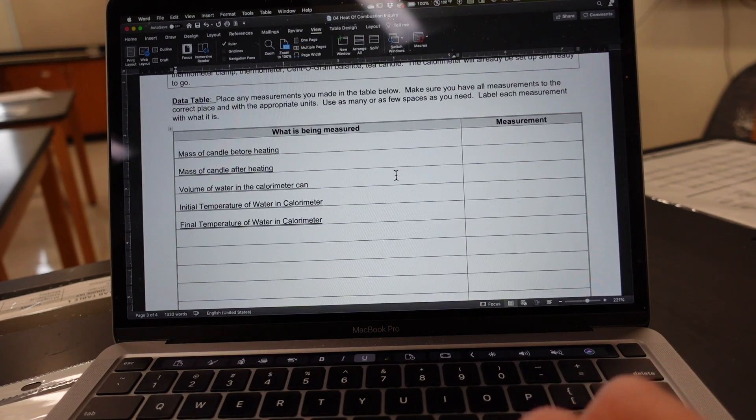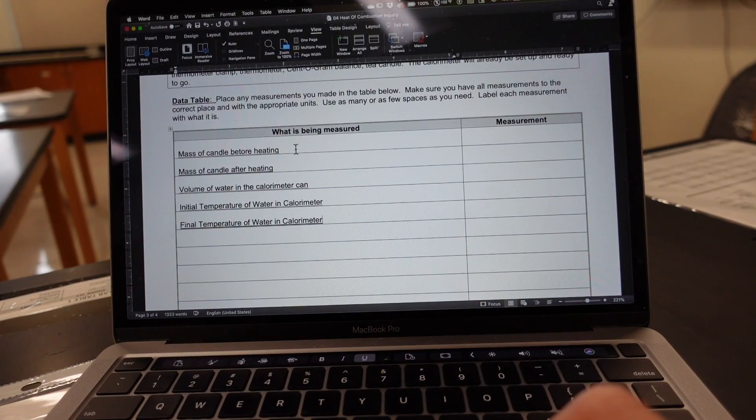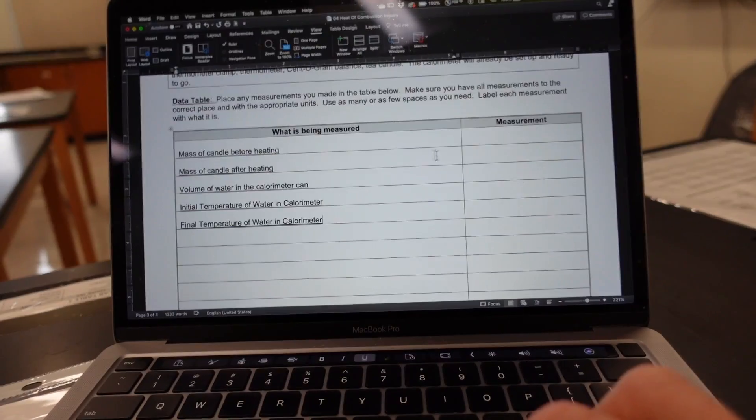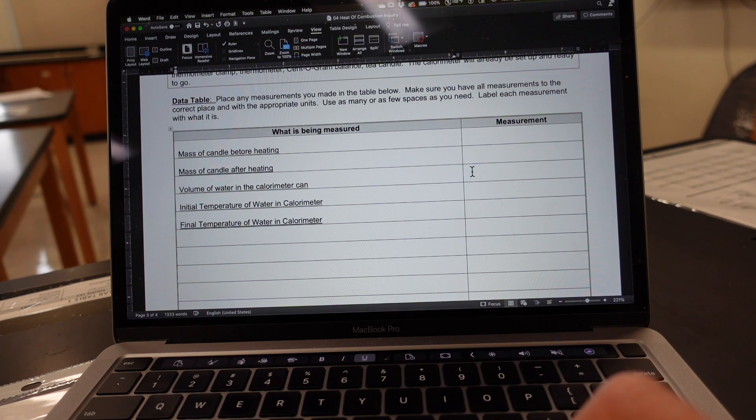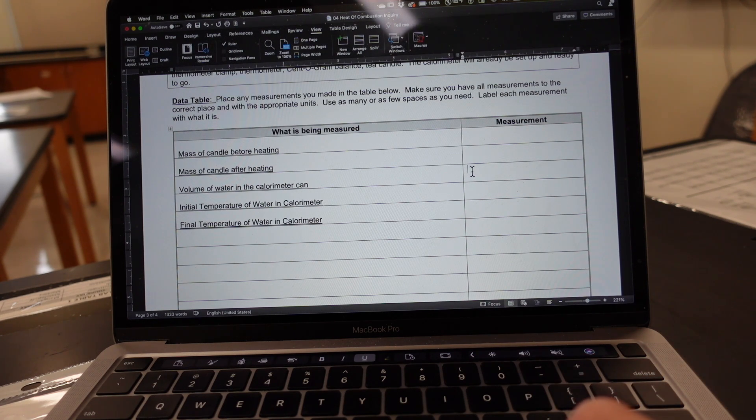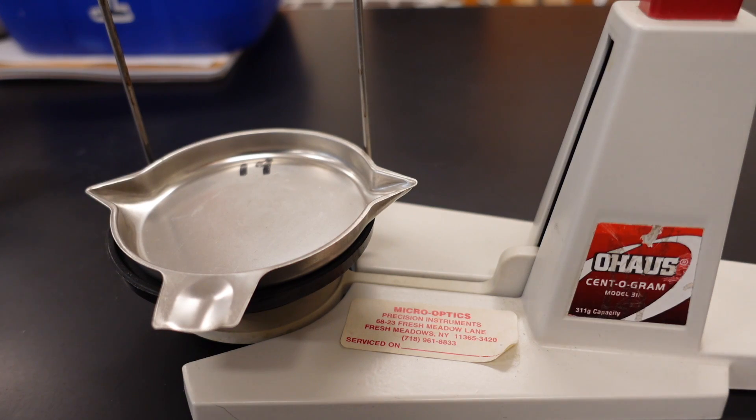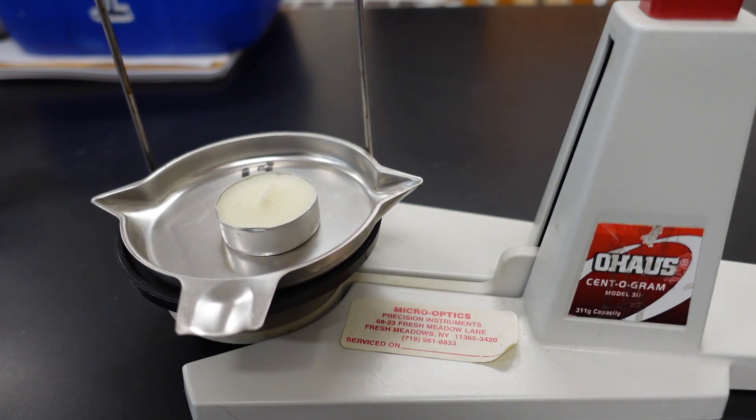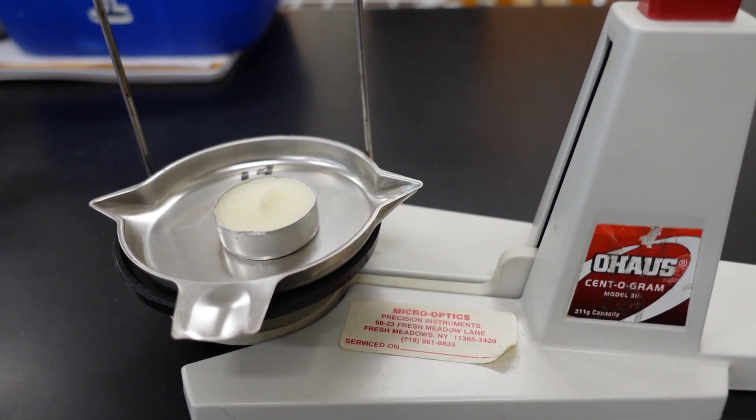So that's where you will place your measurement. Now we also have to weigh the candle before we heat it and the candle after we heat it, and then we're going to also have to put the initial temperature of the water in the calorimeter and then the final volume of the water in the calorimeter. So we're going to put all those measurements in these spots. So go ahead and put that volume of water right here, and then we're going to get some masses.